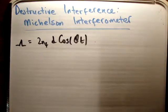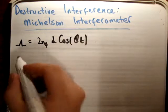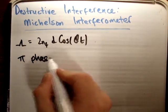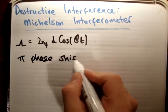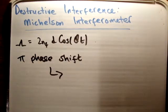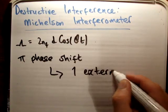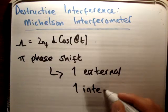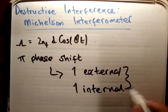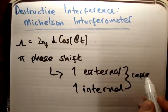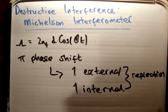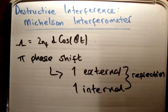Now, because during a Michelson interferometer, you're going to get a pi phase shift. And the pi phase shift comes from the fact that you get one external and one internal reflection. So as a result, we only get one pi phase shift, because we're only getting one of those.